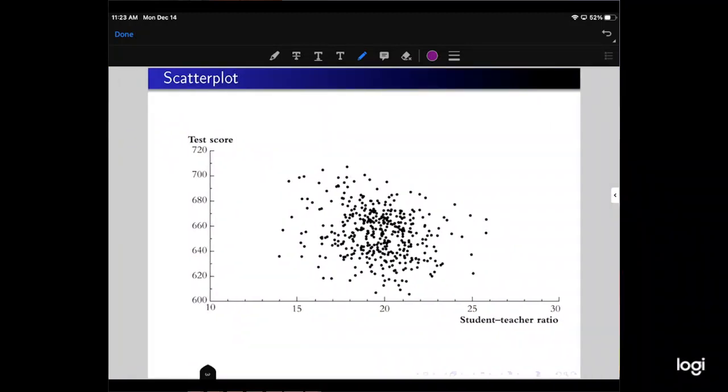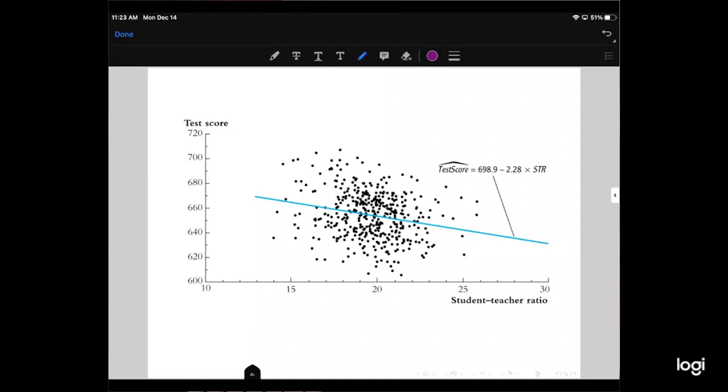Again, we have a scatter plot from the book. This is the scatter plot of student-teacher ratios and test scores of actual data points. It's not obvious what this relationship is. Just from this scatter plot, it looks like the correlation is not super high. It's just sort of a cloud. But if we put the estimated regression line through here, we can see that the slope is negative.